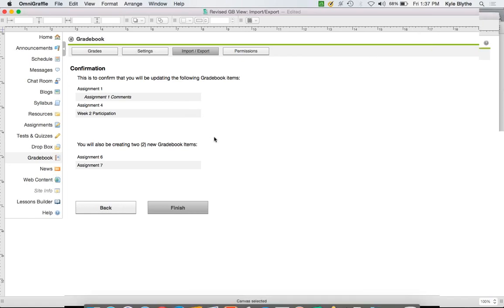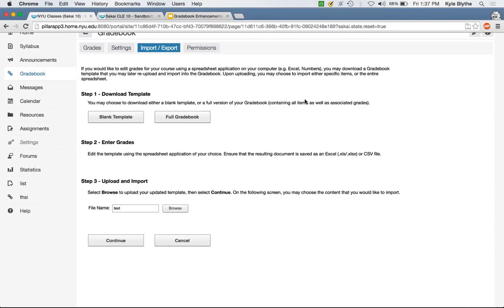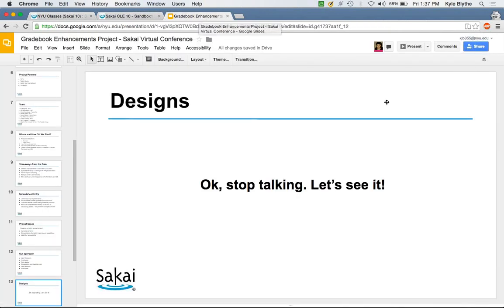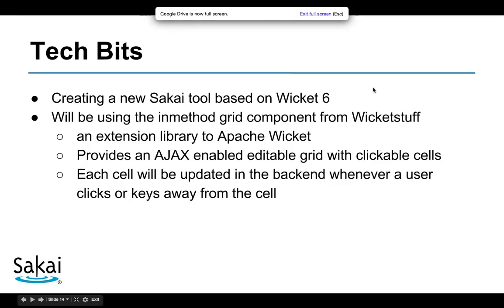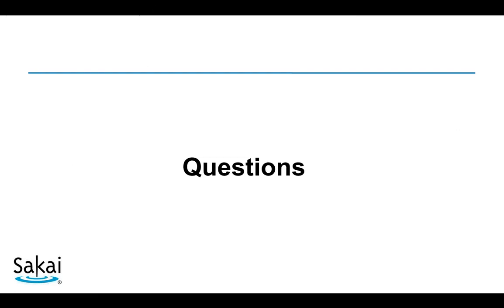That is the prototype as it currently exists. Jeff takes back over for a few technical bits, noting he's not deeply technical and a follow-up with Steve and Peyton would cover more detail. The team will be creating a new Sakai tool based on Wicket 6, using the in-method grid component from Wicket Stuff. For large classes, the approach is to load the whole dataset to start with, then address bottlenecks with infinite scroll or a 'load more rows' feature. For accessibility, additional HTML attributes enable the required ARIA attributes.